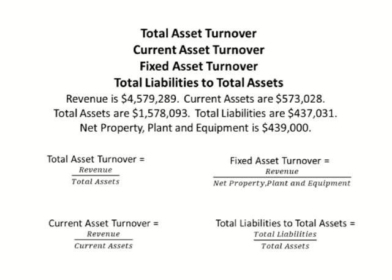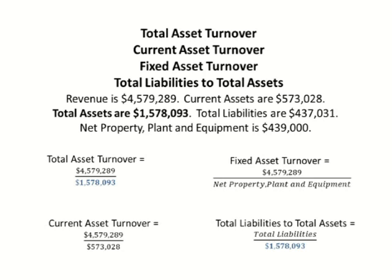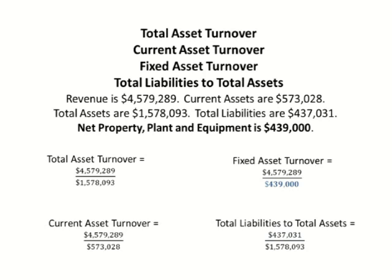The revenue number is used in total asset turnover, fixed asset turnover, and current asset turnover. Current assets are inputted into the current asset turnover calculation. Total assets are inputted into total asset turnover and total liabilities to total assets. Total liabilities go into the total liabilities to total assets calculation. And net property, plant, and equipment is entered into the fixed asset turnover.